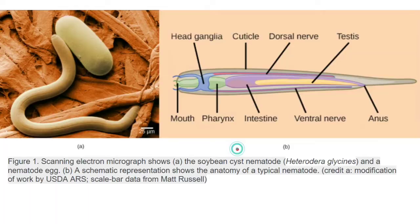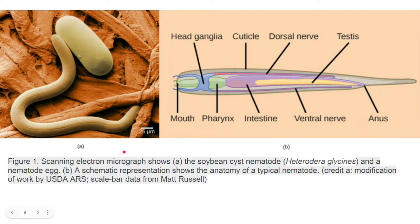Looking at the structure: the mouth is at the anterior portion, with the intestine below it. We can also see the cuticle, dorsal nerve, ventral nerve, testes of the roundworm, and the anus where excretory products exit. The electron microscope image shows the Heterodera glycines nematode and a type of ovum.